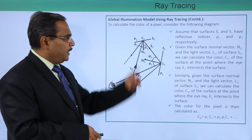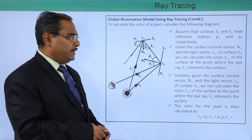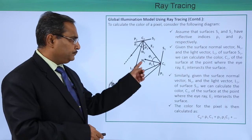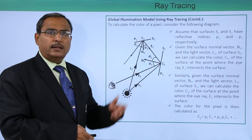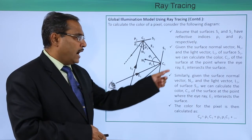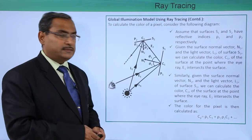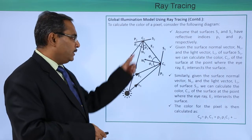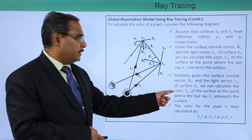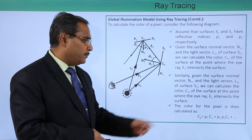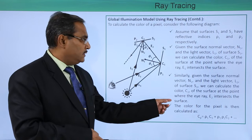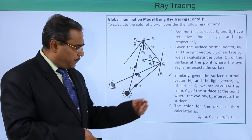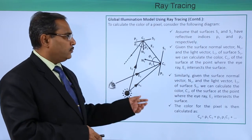Assume that surfaces S1 and S2 have reflective indexes rho1 and rho2 respectively. Given the surface normal vector N1, the light vector L1, and surface S1, we can calculate the color C1 of the surface at the point where the I-ray E1 intersects the surface. Similarly, given the surface normal vector N2, the light vector L2, and surface S2, we can calculate the color C2 at the point where the I-ray E2 intersects the surface. The color for the pixel is then calculated as: Cp = rho1·C1 + rho1·rho2·C2 + ...